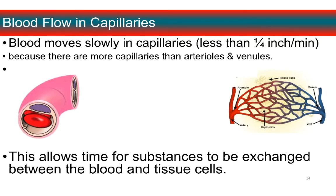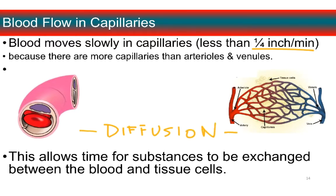In the aorta, blood moves at about 16 inches per second. Contrast that with its speed in the capillaries, which is about a quarter of an inch per minute — so really slow. That happens because there are more capillaries than arterioles and venules. And it's really important because the exchange of substances between the blood and tissue fluid happens by passive transport — diffusion — based on a concentration gradient. Diffusion takes time, so the slower the blood moves, the more time there is for capillary exchange.